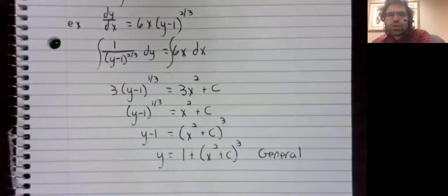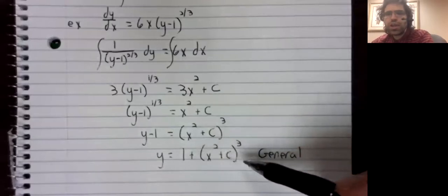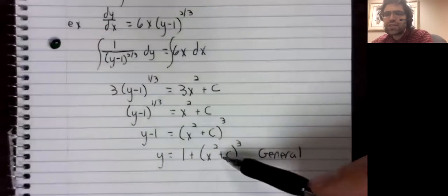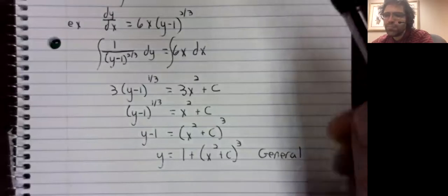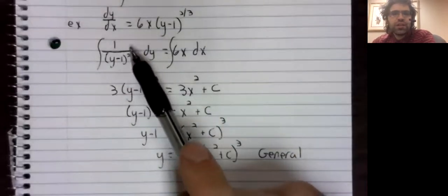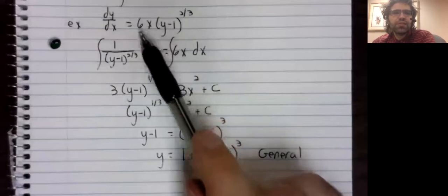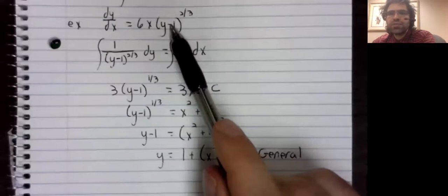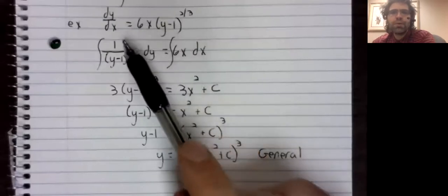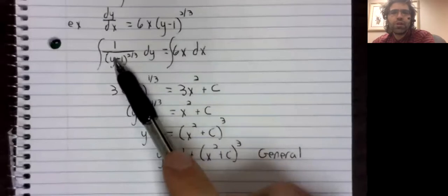But it turns out there's one other solution that doesn't look anything like that, a stray solution that we call singular. And that solution comes from this step, from dividing by (y minus 1) to the 2/3rds power over here.